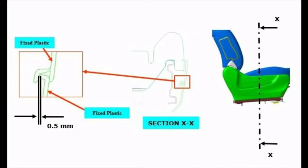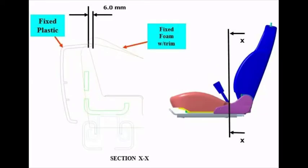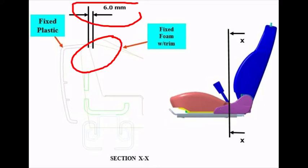The fifth point: for a fixed plastic part to a moving plastic part, mostly 3mm clearance is recommended. Please see the image. The sixth guideline is for a fixed plastic part to a fixed foam part. In that case, we overlap or crush 6mm in the case of high density foam.